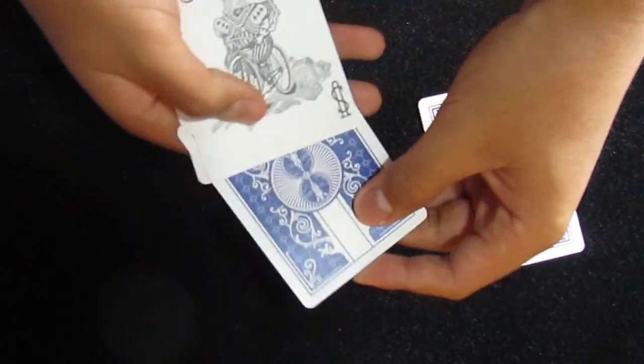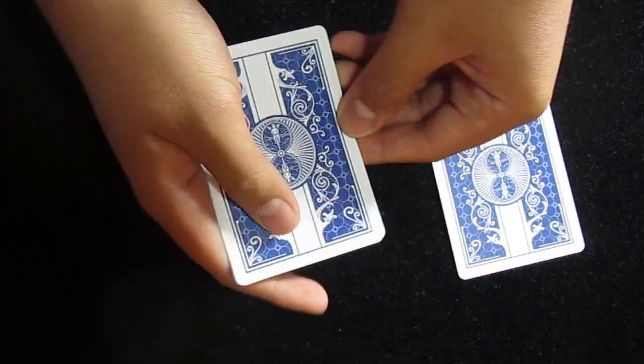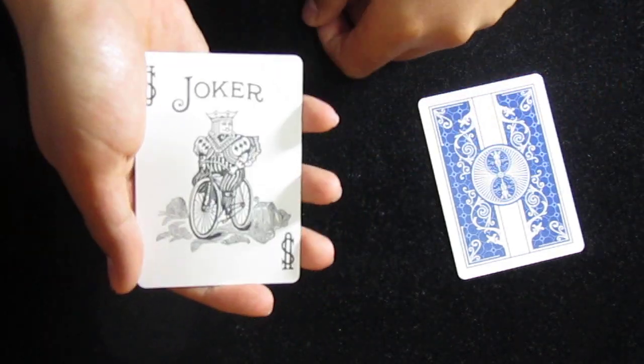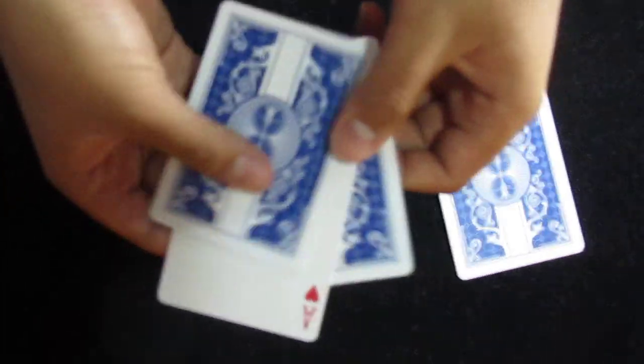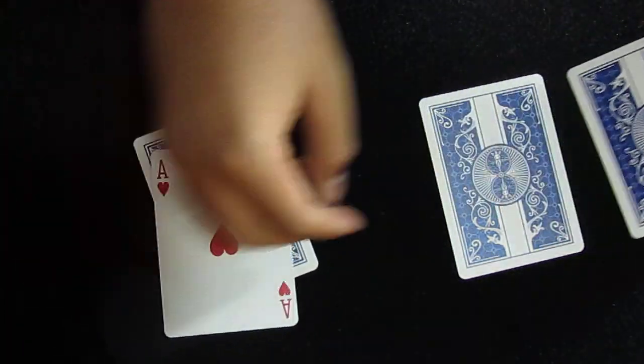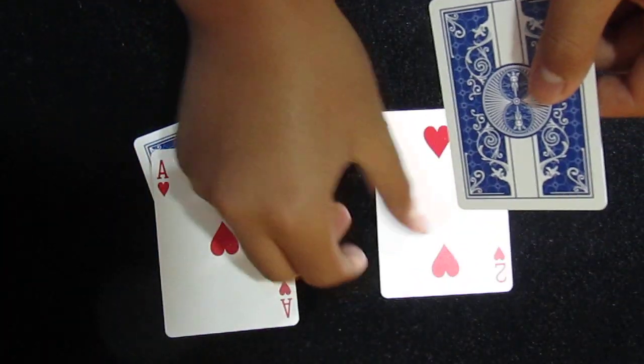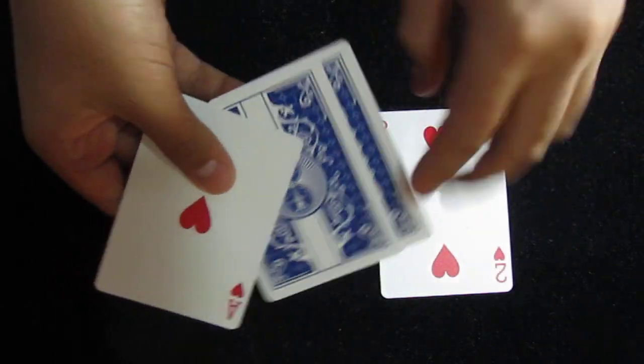And I'll take this two and sandwich it between the two jokers. Now if I snap my fingers, now it's an ace of hearts. So what's this? It's actually the two of hearts, so they switch places.